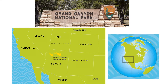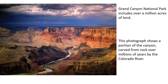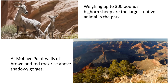We are now heading east to Arizona to the Grand Canyon National Park. The Grand Canyon overwhelms our senses through its immense size. Grand Canyon National Park includes over a million acres of land. This photograph shows just a portion of the canyon that was carved from rock over millions of years by the Colorado River — that's how our canyons were formed. Over billions of years, the rivers would wear away at the rock and create the canyon. Weighing up to 300 pounds, bighorn sheep are the largest native animal in the park. At Mohave Point, walls of brown and red rock rise above shadowy gorges.